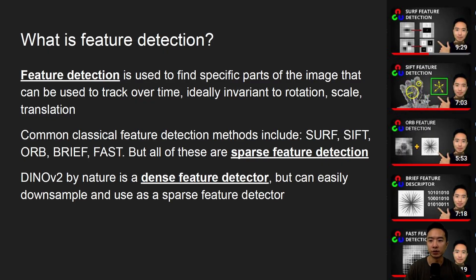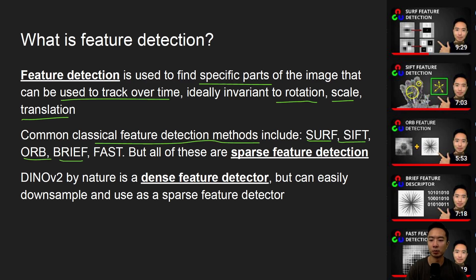So what is feature detection? Feature detection is used to find specific parts of an image that can be used to track over time. Ideally, some properties that we look for include invariance to rotation, scale, and translation. Common classical feature detection methods include things like SURF, SIFT, ORB, BRIEF, and FAST, but all of these are sparse feature detection, which I talked about in my OpenCV Python playlist.